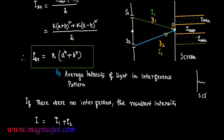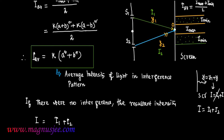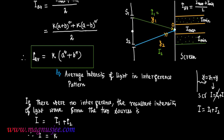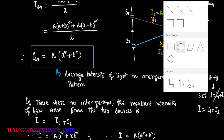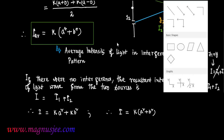The resultant intensity will be I = I1 + I2 if interference does not occur. On the screen, the resultant light wave is Y = Y1 + Y2, and the resultant intensity is I = I1 + I2. If interference occurs, the average intensity is IAV = (Imax + Imin) / 2. Putting the expressions I1 = KA² and I2 = KB², where A and B are the amplitudes of the two interfering light waves, we get I = K(A² + B²).